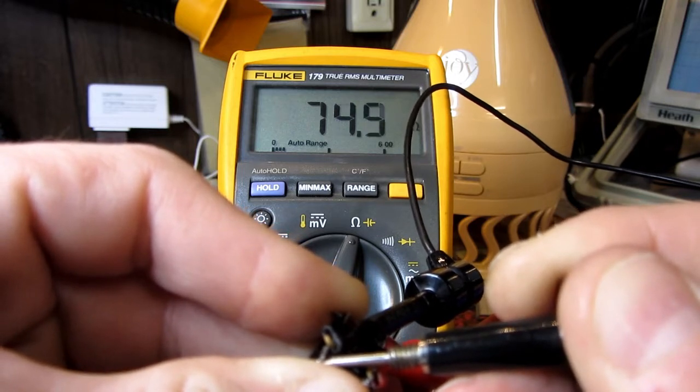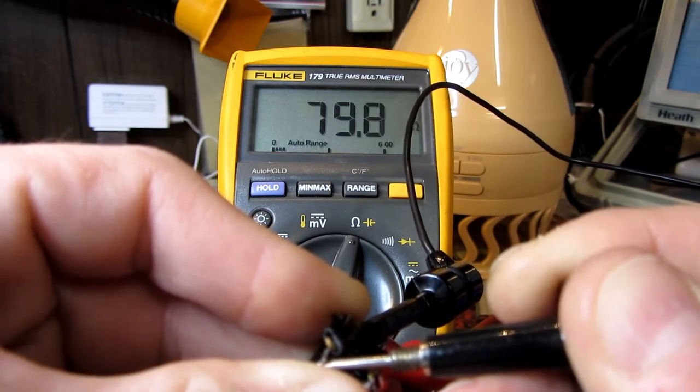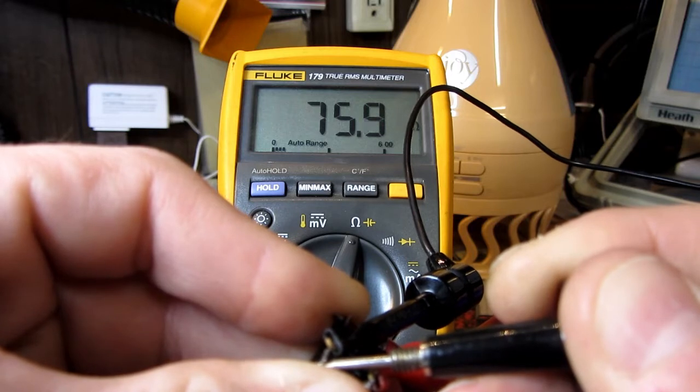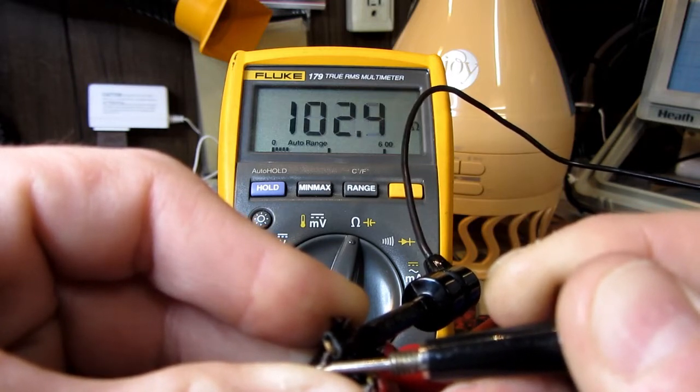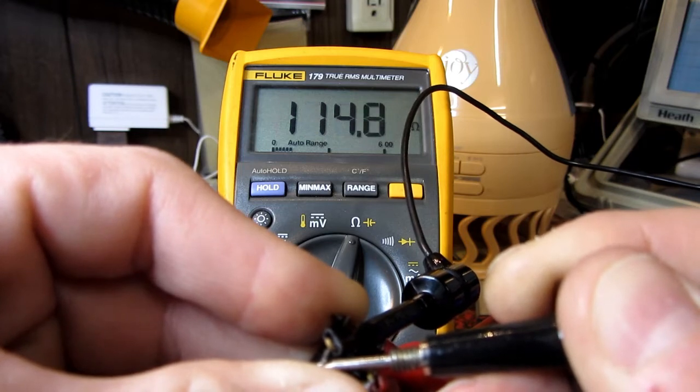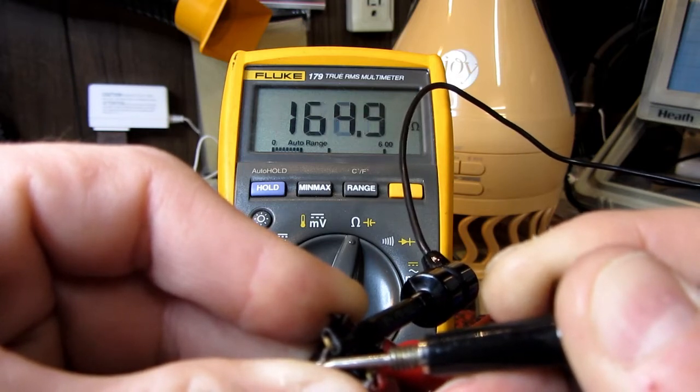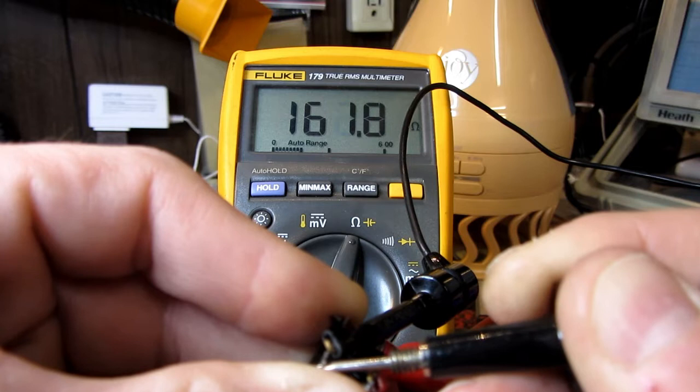Like I said there's nothing you can do with these except replace them. I've tried cleaning them before—it's futile. So that goes to show you how you have to test these. When this one's engaged, this is the contact that's bad, the engaged contact.